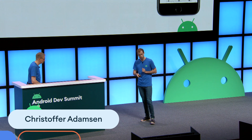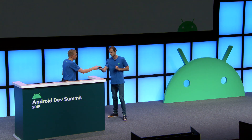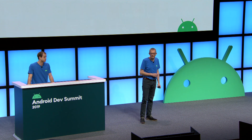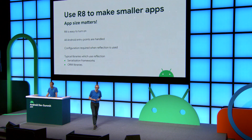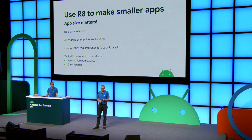The takeaway: use R8 to make your app smaller, as app size does matter. It's easy to turn on. All Android entry points are handled. You only need to worry about reflection — particularly in serialization frameworks or object-relational mappers.